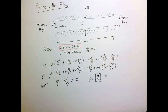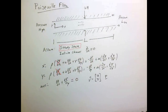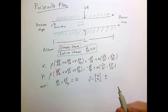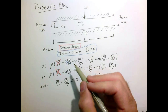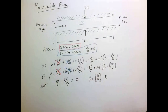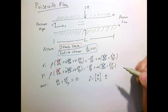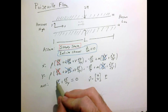Let's apply our assumptions. Assuming steady state, we can cross out all derivatives with respect to time — the time derivatives of x and y velocities are zero. Assuming an infinite channel where derivatives with respect to x are zero, we can cross out the partial derivative of u with respect to x, the v velocity with respect to x, and the second x-derivative terms. In conservation of mass, we can also cross out that term.